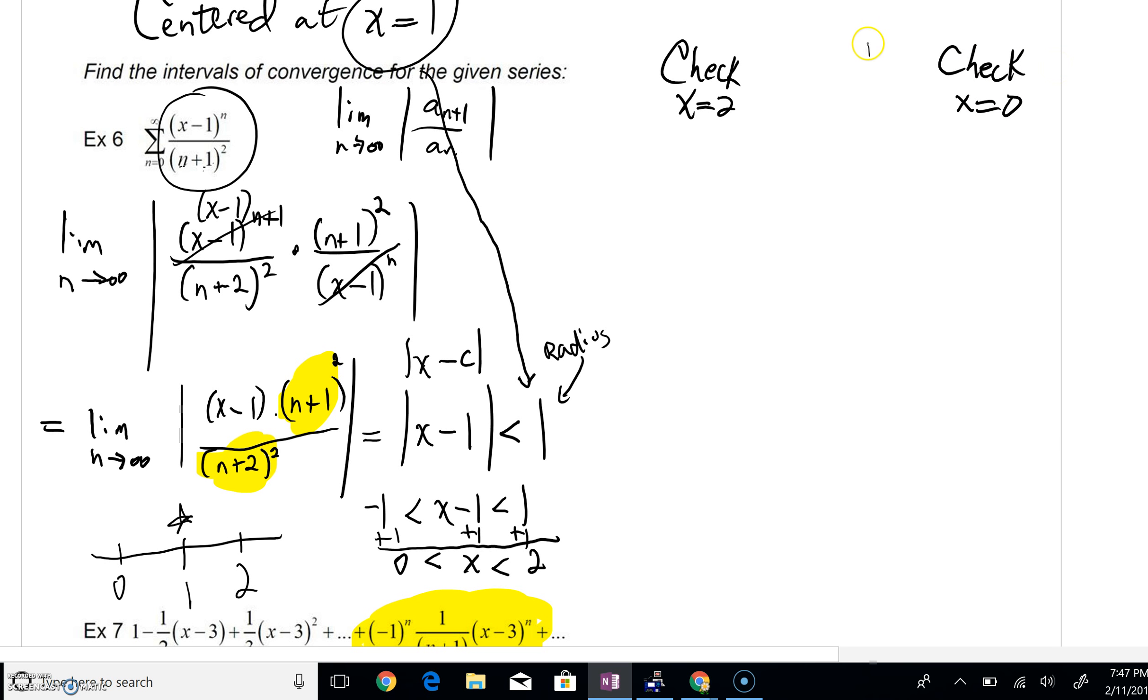Now stating the obvious, if we plug x equals two back into sigma, we're going to get something that's going to look rather interesting. You can see that we'd get two minus one to the n over n plus one squared. And that's just one to the n.